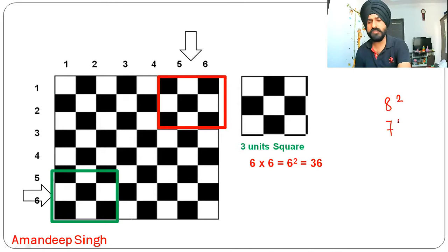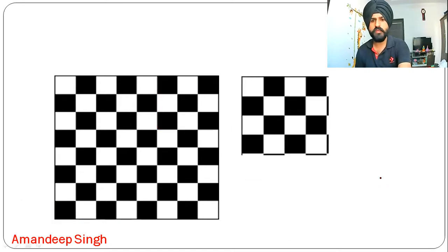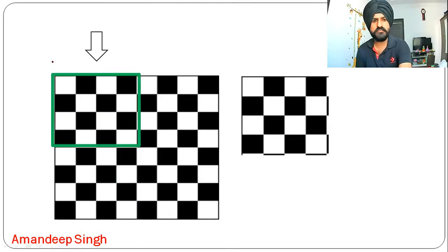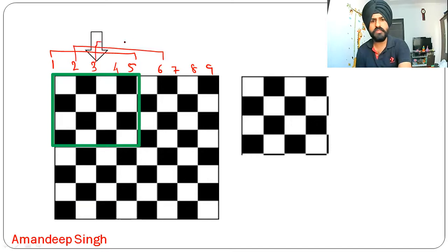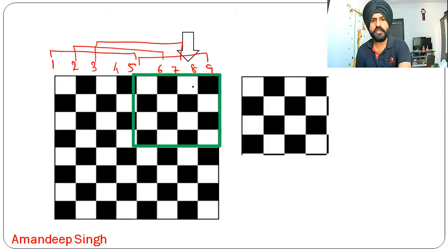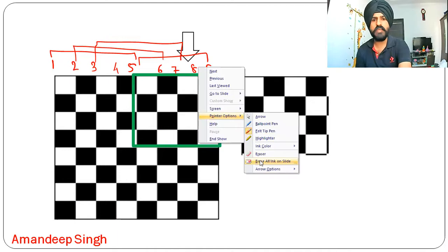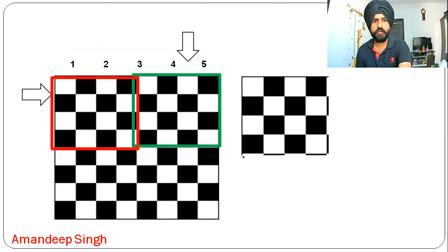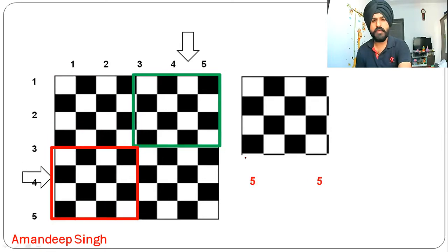We're probably getting five squares for the four unit square — let's verify. For a four unit square, label the vertical lines one through nine. From one to five is the first square, two to six the next, three to seven the next, and five to nine the last. There are five squares left to right and five top to bottom, giving five times five, which is 25 such squares.